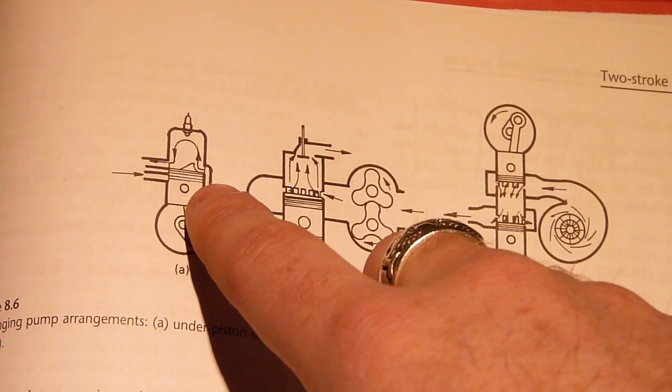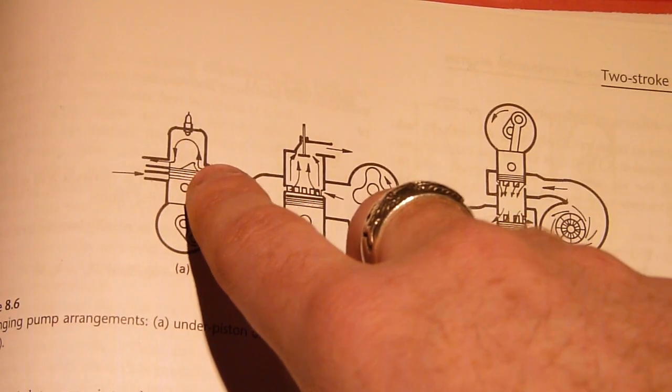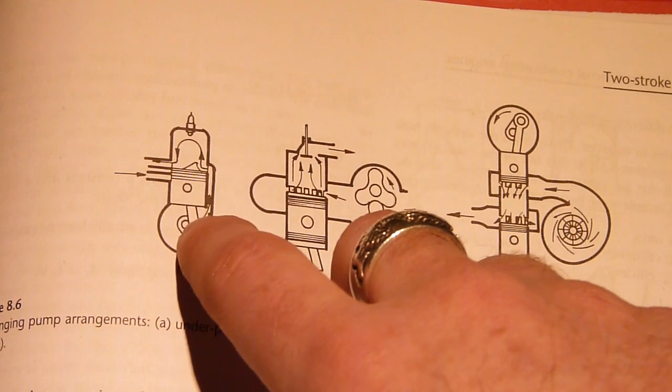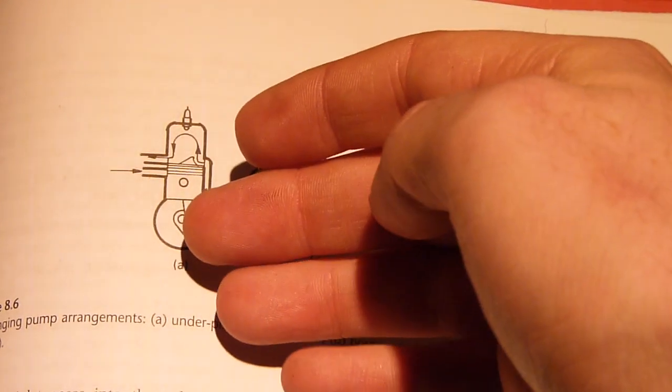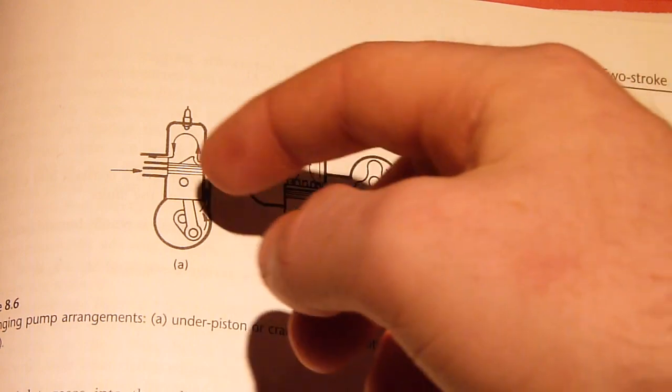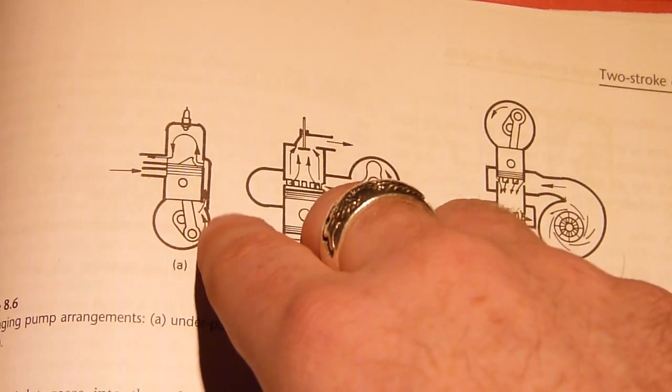As the piston goes down, it's having to exert more force on itself to pressurize the already pressurized charge, so that means you're losing out. You're actually putting more effort in, so you're using more power to compress this charge more.